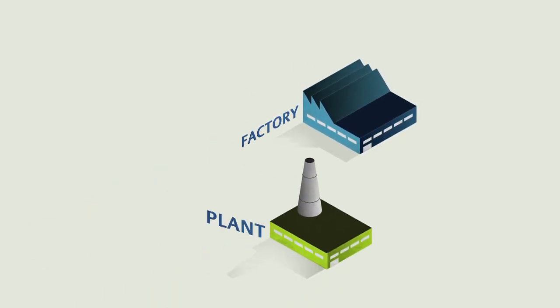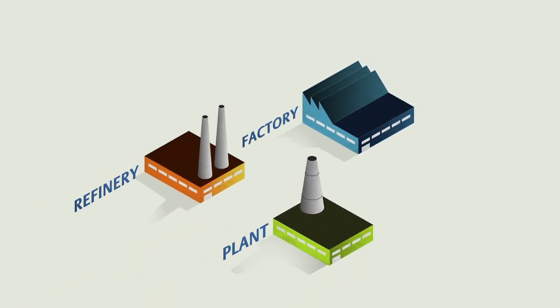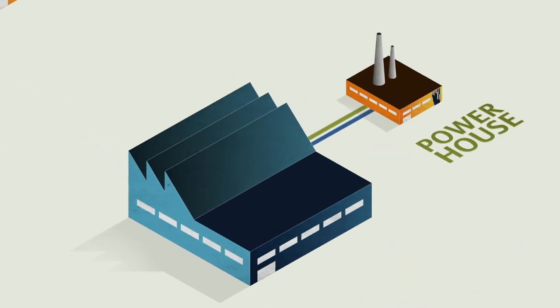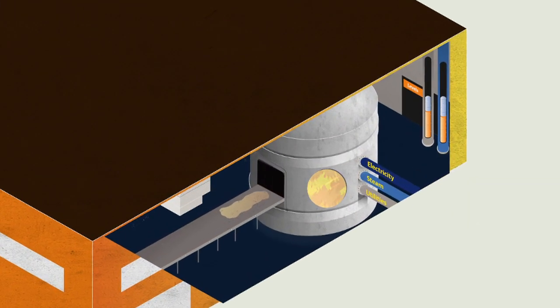Behind every manufacturing, processing, and refinery operation is the powerhouse, a facility that delivers steam, electricity, and other utilities to the rest of the operation.